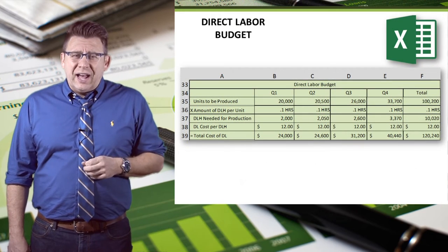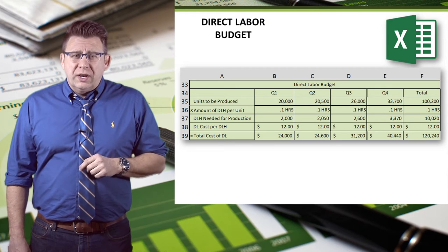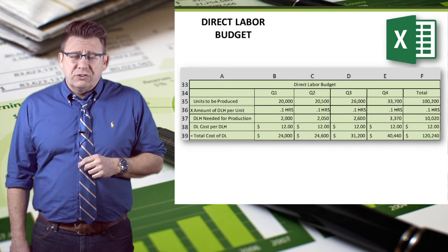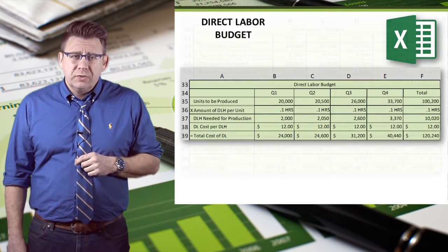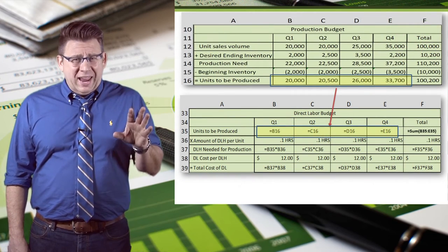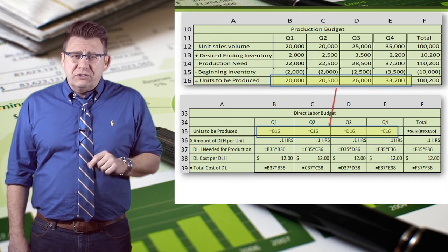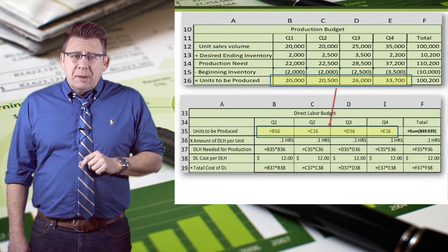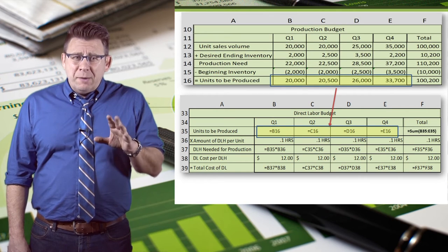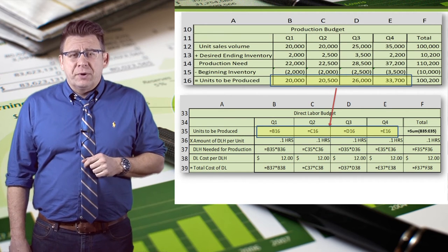So let's look at how to do this in Excel. Notice the column letters and row numbers — we'll reference these as we look to build these budgets in Excel. Here we have both the production budget and the direct labor budget. We start by linking the two budgets together by having the units to be produced in the direct labor budget linked to the same cells in the production budget.